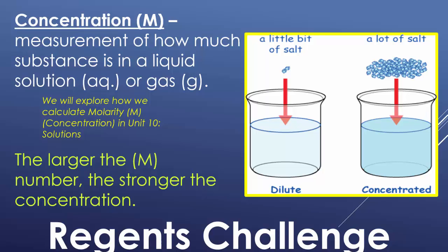Concentration, which is that capital M, is a measurement of how much substance is in a liquid, like a solution or a gas. It's essentially how much stuff we have. The larger the number is, the larger the M will be, or the stronger the calculation will be. If you put a little bit of salt into water, we call that a dilute solution. But, if you put a lot of salt into that water, we call that concentrated. A very large M shows a very concentrated solution or gas, but a very small M says it's going to be very dilute.